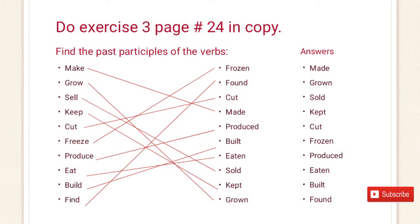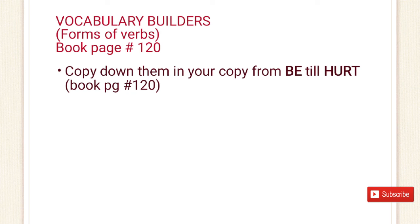Do exercise 3, page number 24. The question is: find the past participle of the verbs. You have to match the first form of the verb with the past participle form of the verb. The answer has been given here. The next exercise is about vocabulary builders — that is, forms of verb. Look at page number 120 of your textbook. Here, irregular verbs are given. You have to copy down irregular verbs from 'be' to 'hurt.'